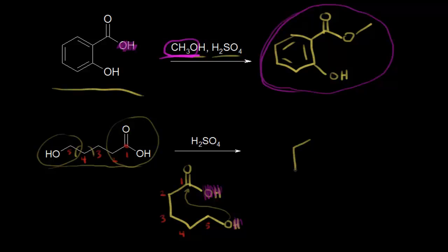We're going to form an ester, but it's different from what we've seen before. We have our carbonyl, and then this oxygen becomes a member of our ring — it came from the alcohol oxygen. We can see all five carbons in the ring: one, two, three, four, five. We lose water, and the product is called a lactone — an ester that's in a ring. Here we have a six-membered ring where oxygen is one of the members. It's a pretty cool intramolecular Fischer esterification reaction to form a lactone.